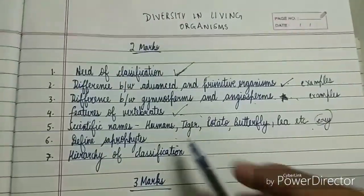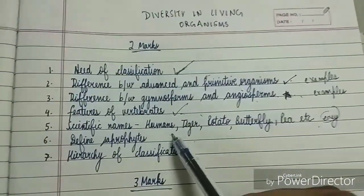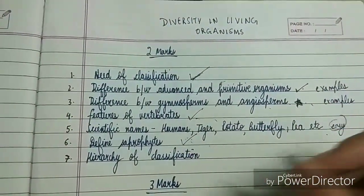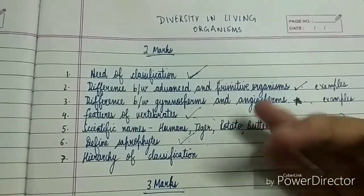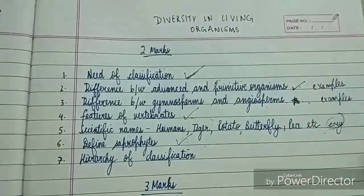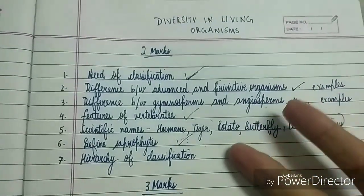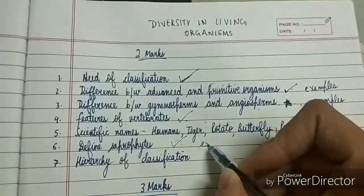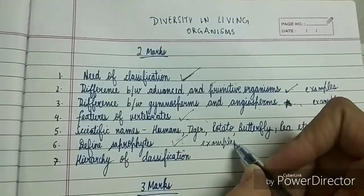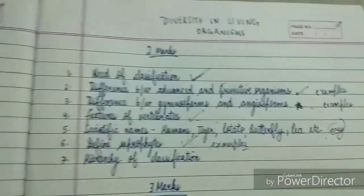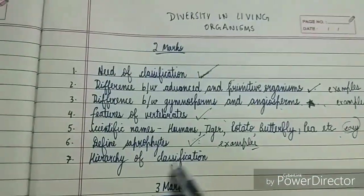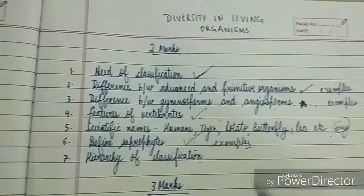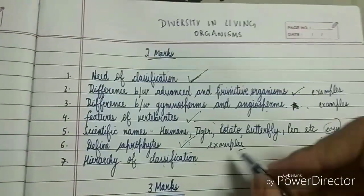Next, define saprophytes. Saprophytes are another important topic from this chapter. The definition can come in two marks, and you also need to give examples while writing the answer to this question.